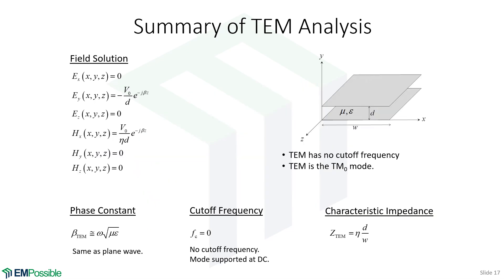Here's a summary of what we did. We calculated the fields between the plates and obtained our phase constant. Since it's the TEM mode, there is no cutoff frequency — the TEM mode goes all the way down to DC. We also now have an expression for the characteristic impedance. One additional note: when we analyze TEM modes, the zero-order TEM mode is the TEM mode — that will make more sense when we get to that topic.